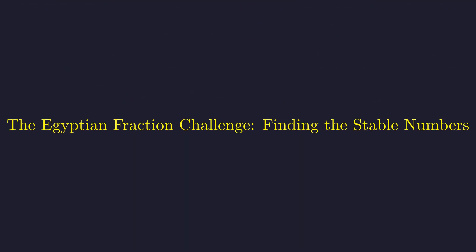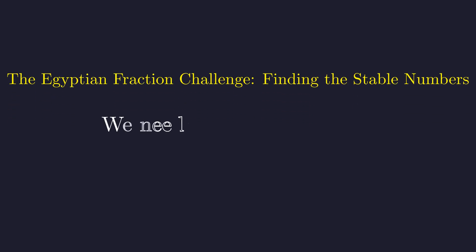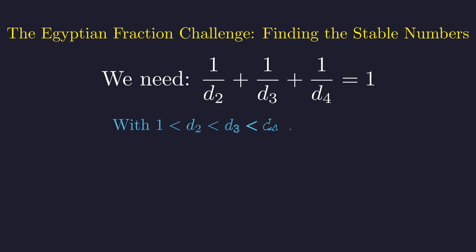We now need to solve for the divisors d2, d3, and d4 that satisfy our stability condition. This is an example of an Egyptian fraction problem. The equation we must solve is 1/d2 + 1/d3 + 1/d4 equals 1. Recall that d2, d3, and d4 are distinct integers greater than 1, in increasing order.